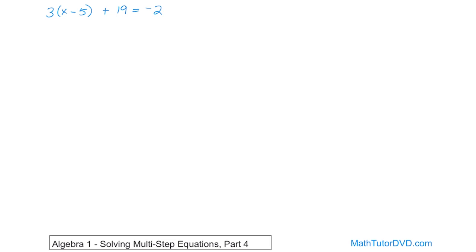The 19 is the farthest thing away. I know that if I subtract 19 from both sides, I'll kill the 19 entirely, and I want to make the equation simpler every time.